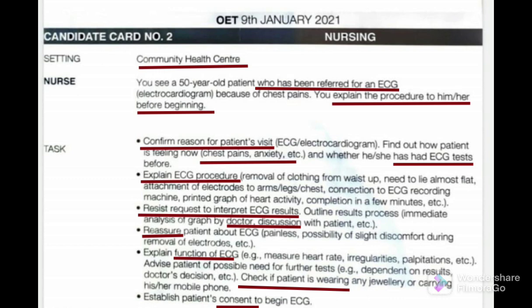There is one paragraph — you always have to give more importance to this paragraph. From here you will get exactly the role of the nurse. You can see: you see a 50-year-old patient who has been referred for an ECG electrocardiogram because of chest pains. You explain the procedure to him or her before beginning. So this is an unknown scenario. You can see the first part: confirm the reason for the patient's visit. When you are utilizing the three-minute preparation time, just have a quick look and underline the important points, because in one task you will have more subtasks.